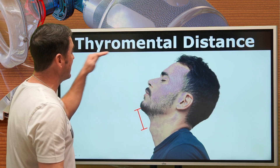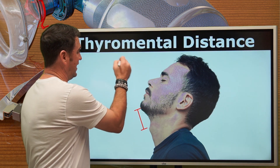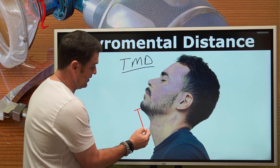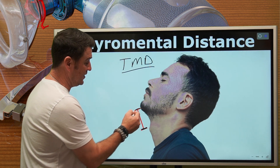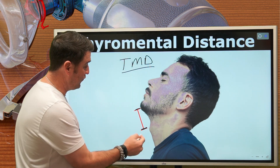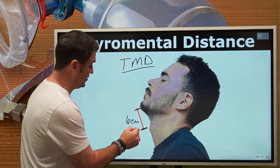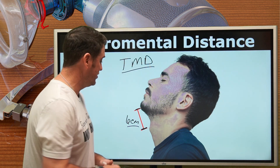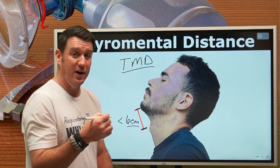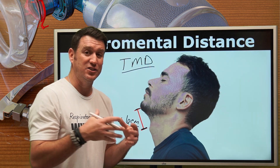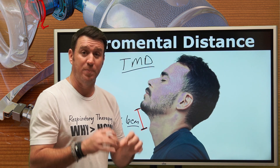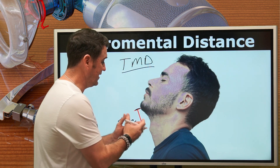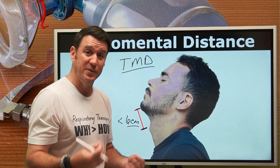Another tool we can use is called the thyromental distance, often abbreviated as TMD. We measure from the protrusion of the thyroid cartilage up to the mentum — the tip of the chin. We're looking for six centimeters as the threshold. Less than six centimeters of TMD is associated with a risk for potential difficult intubation: the neck is shorter, the airway may be more anterior, and this is potentially going to be associated with a difficult establishment of an artificial airway.